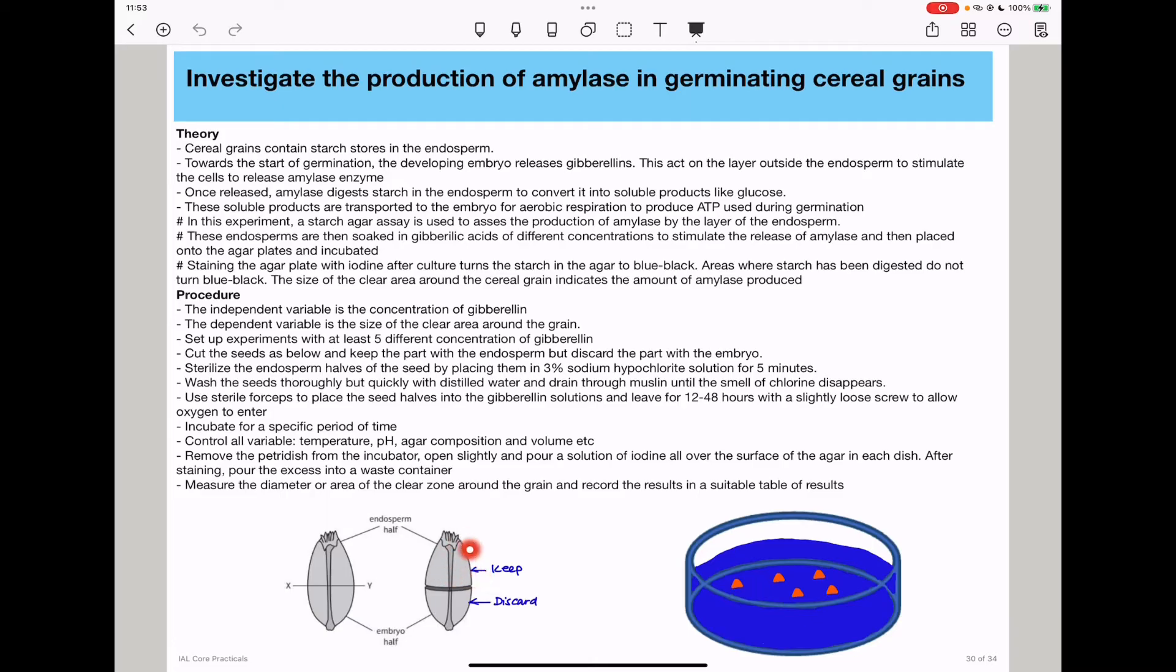Cut the seeds, soak them in gibberellic acid of different concentrations for a specific period of time, then place them onto agar for a specific period. The amylase released from them digests the starch. After incubation, use iodine to see the regions where starch has been digested.